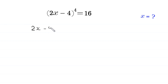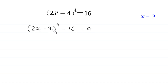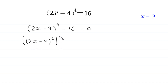(2x minus 4) to the power 4. We move this 16 to the left-hand side, it will become negative 16 is equal to 0. Now, (2x minus 4) to the power 4 can be written as (2x minus 4) squared, whole to the power 2, minus this 16 can be written as 4 squared, is equal to 0.